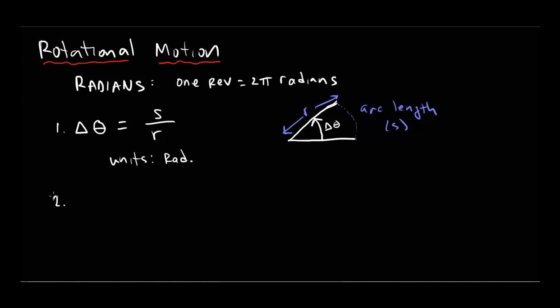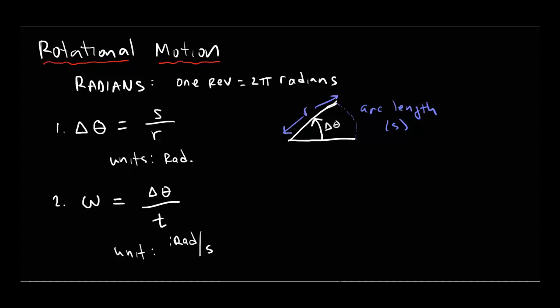The second way of describing an object moving in a circle is how fast it's turning — is it spinning really quickly or slowly? The rate at which the thing is spinning is given by the Greek letter omega, which looks very much like a W. A common everyday unit is RPMs — revolutions per minute — but the unit we're going to use is radians per second. The angular speed omega equals delta theta, the amount of turning, divided by t, the time. The unit is radians per second.